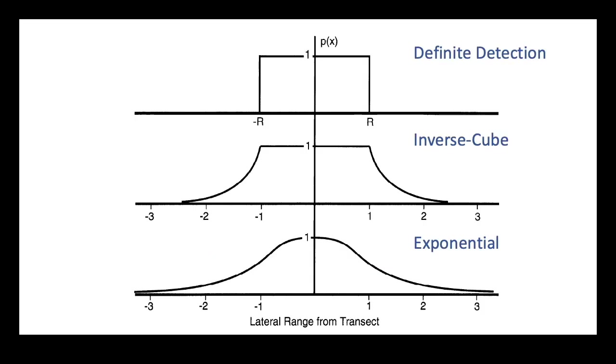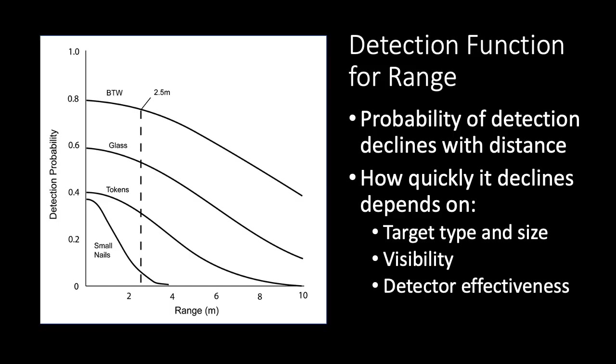Here we see these three models compared, and for many survey types, the exponential model will be the most realistic one. The steepness of falloff in the exponential function will depend on a variety of factors, including what type of target we're talking about, visibility, and how effective the surveyor is.